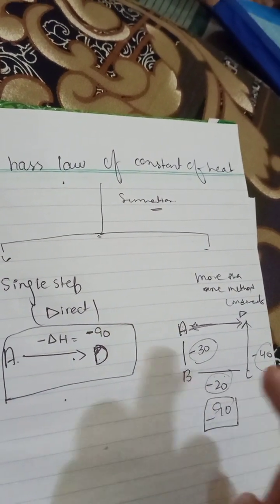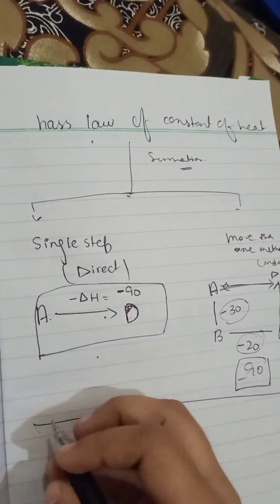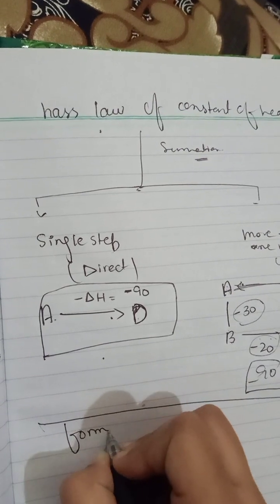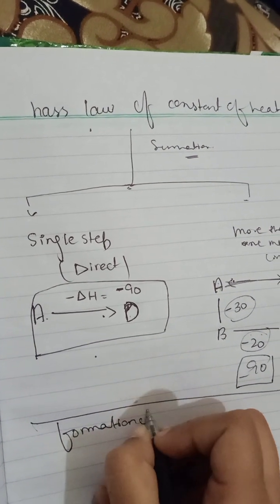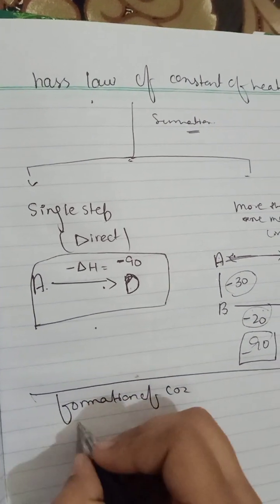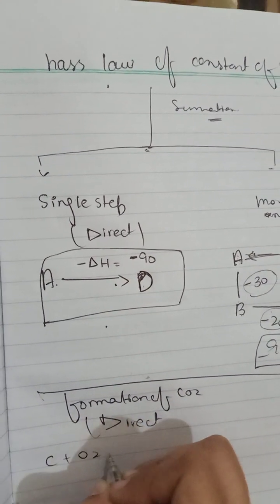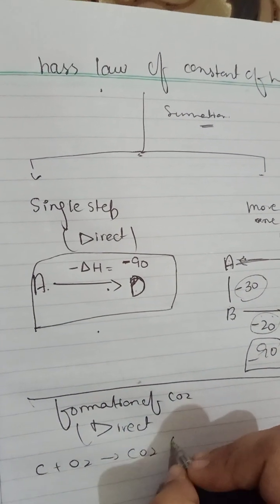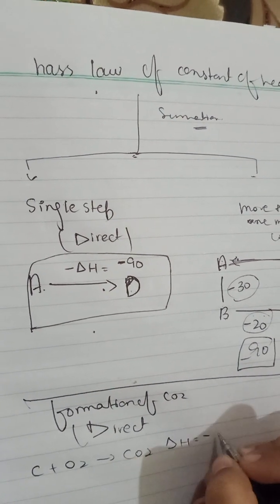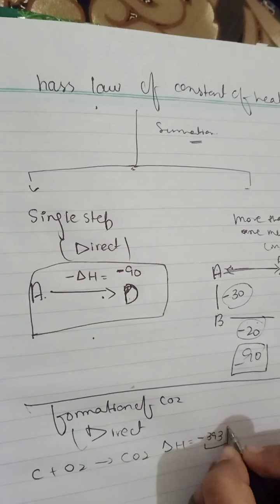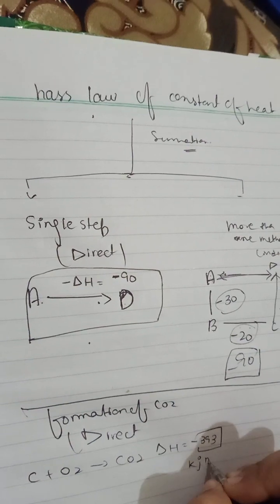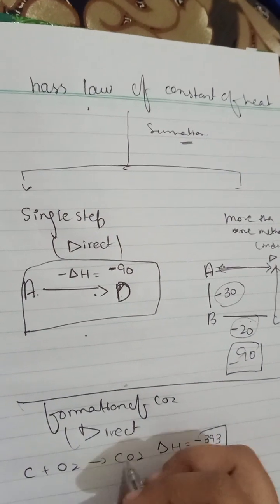For example, let me give you the example of the formation of carbon dioxide. Direct method, I'm talking about a single step. For example, carbon plus oxygen is equal to carbon dioxide and it releases heat, kilojoule per mole. This is a complete method.